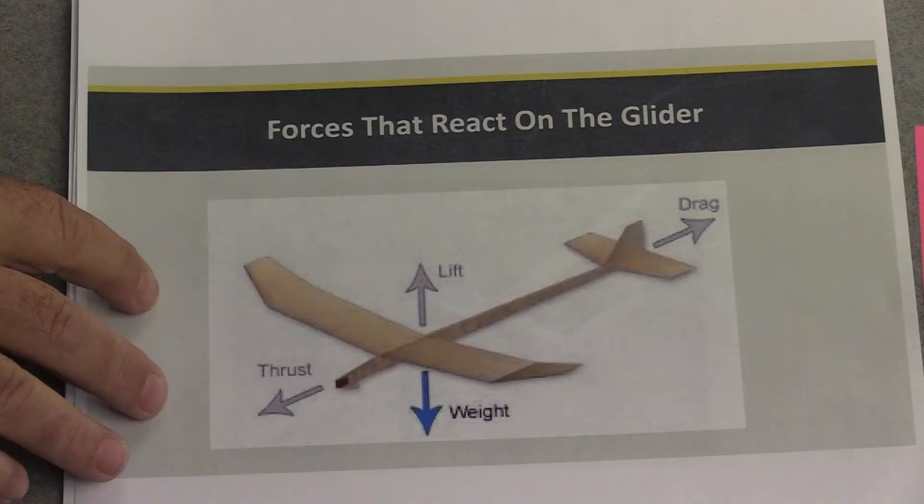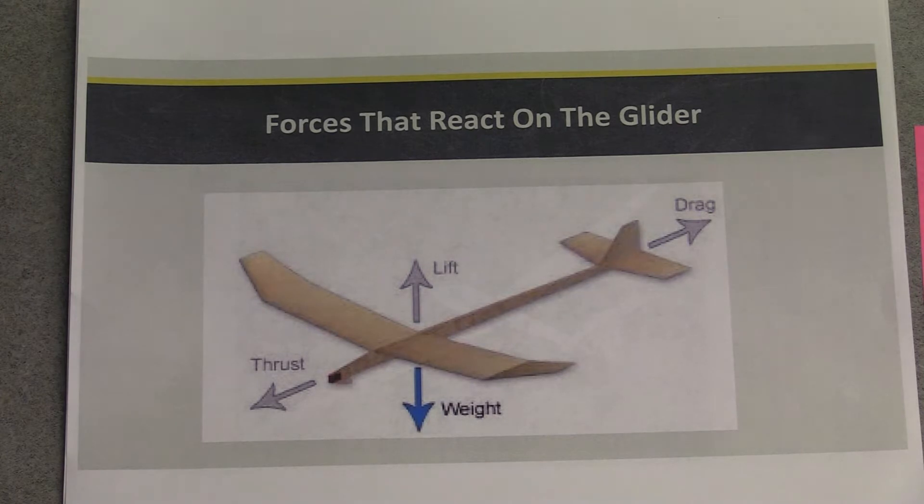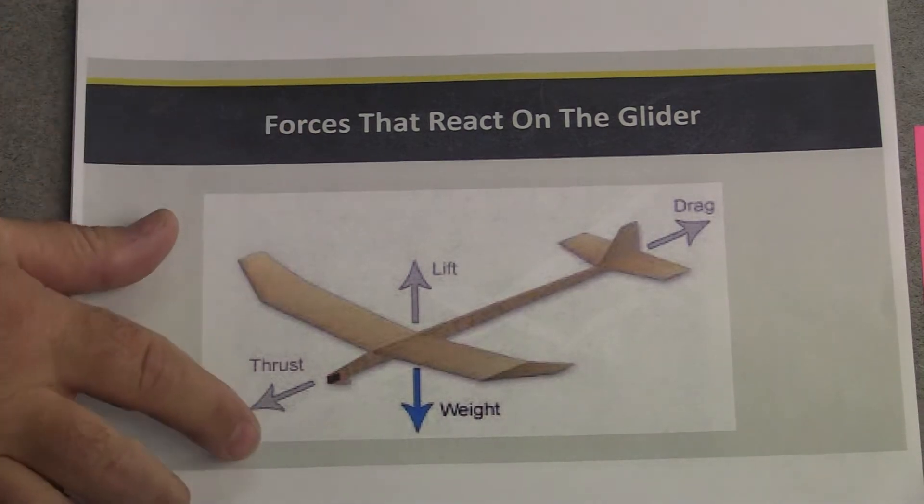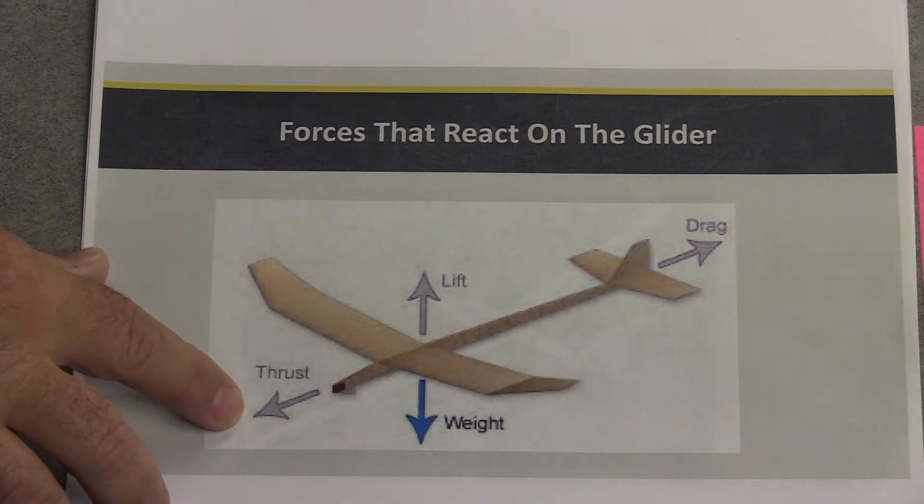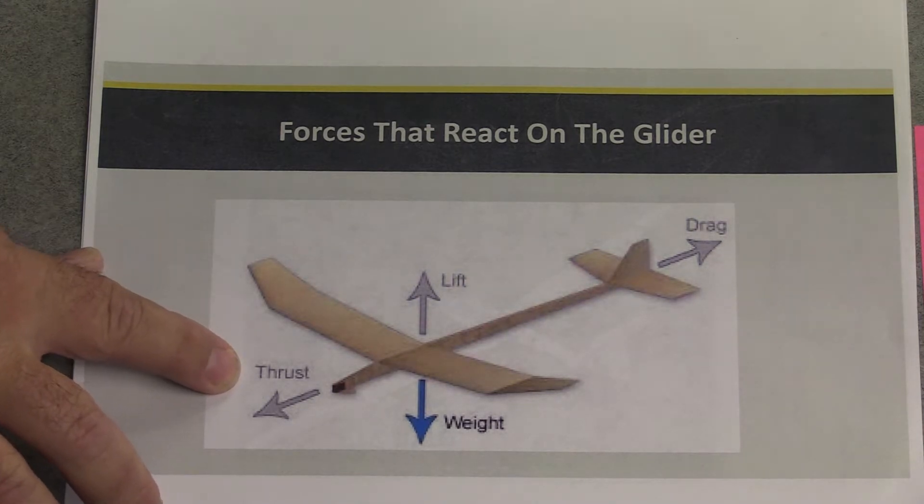Now let's look at the forces acting on the glider — similar to the one you'll get in your kit. There are four forces. First is thrust — how hard or fast you throw the glider, similar to an engine. On real gliders, a tow plane provides thrust by pulling them up into the air. Once the glider reaches sufficient altitude, the tow plane releases it and the pilot takes over.